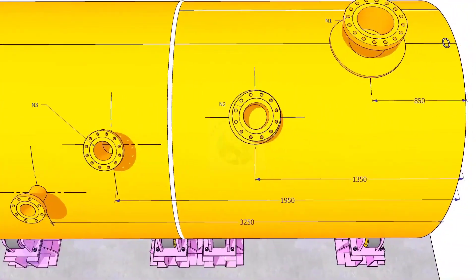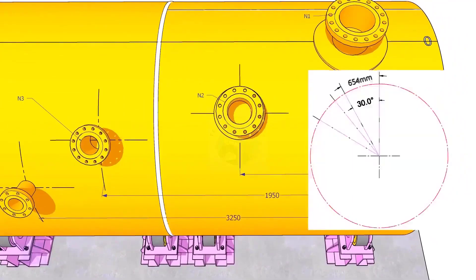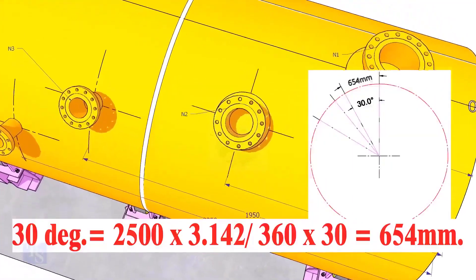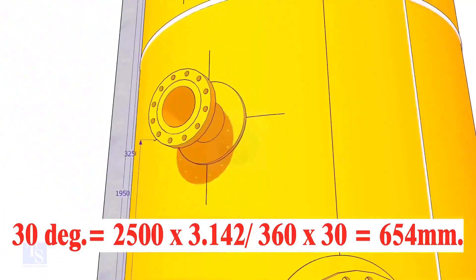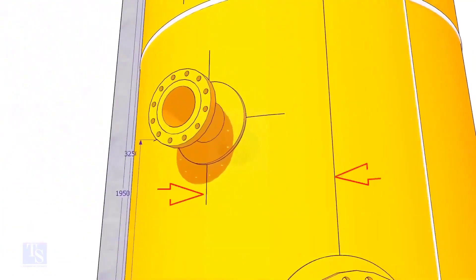Let us mark the center of nozzle N2. It comes on 30 degree anti-clockwise. Convert 30 degree to arc length. Mark this dimension at two locations as shown and draw a line.